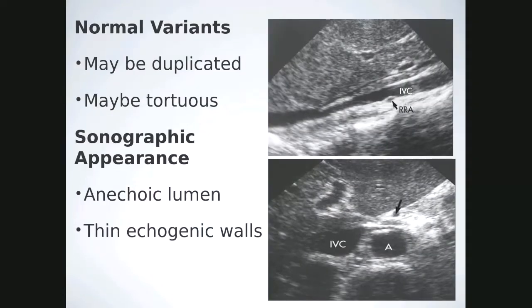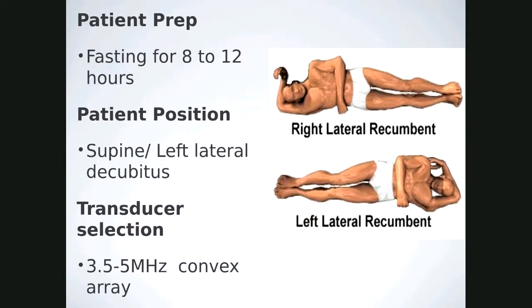It is possible to have a duplicate IVC or a portion of it. The IVC may be tortuous. Sonographically, the lumen is anechoic with thin echogenic walls. Patient prep is fasting for 8 to 12 hours; patient position is supine or lateral decubitus. For both aorta and IVC, a 3.5 to 5 megahertz transducer is recommended, using the highest frequency that allows for enough penetration. For larger patients, drop down to about 2.5 megahertz.